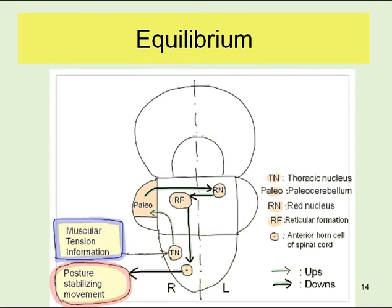As this tract runs in the right paleocerebellum, the lesion causes disorder of equilibrium on the right side of the body. As the lesion affects both sides of the paleocerebellum, in this case it causes disorder of equilibrium on both sides of the body.